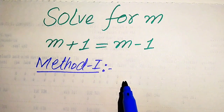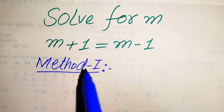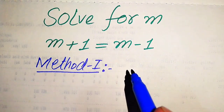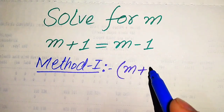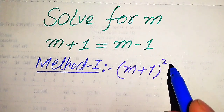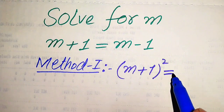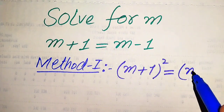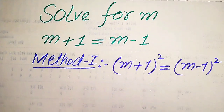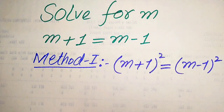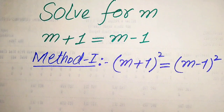Now we move towards the solution using the first method. In the first method, we need to take squaring on both sides because our target is to get the values of m. So we apply squaring on both sides, and the equation is written in this form.